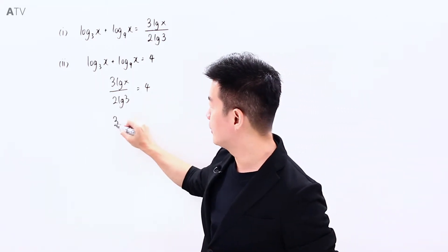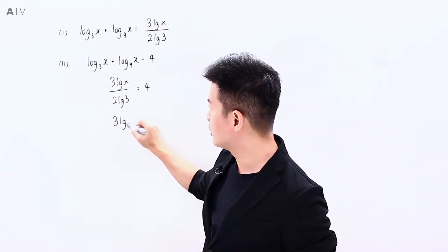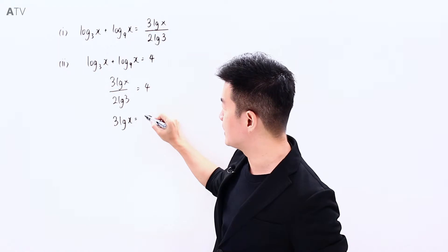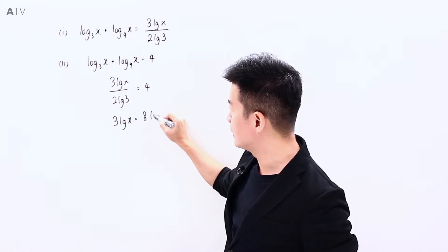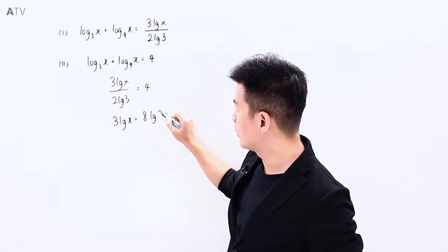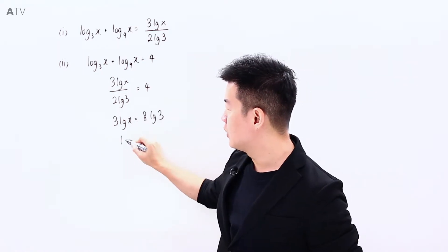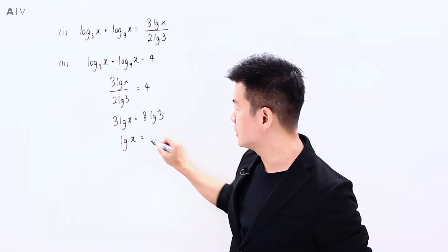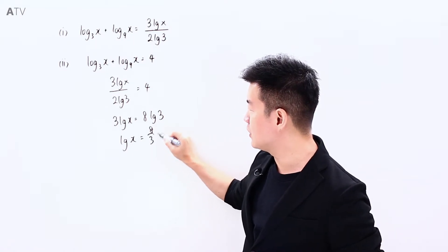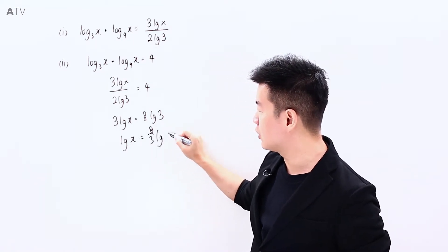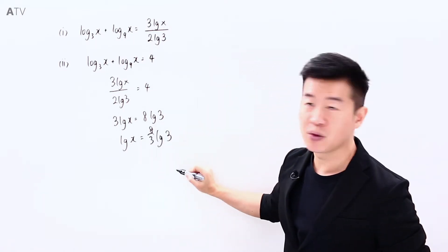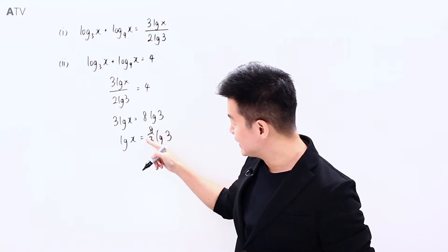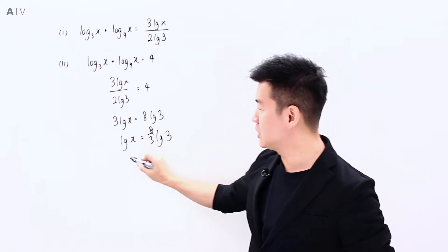Cross multiplying, 3 log x is equal to this times this — it is 8 log 3 — which means that this is going to be equal to 8 over 3 of log 3. And now bringing this back to the power,